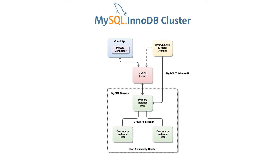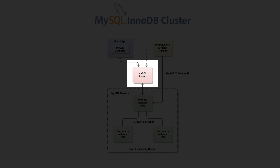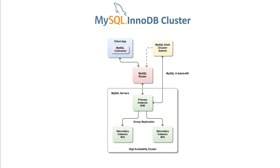And finally, to hide the multiple instances of a cluster behind a TCP port for writes and another one for reads, and to handle connections to the servers in a completely transparent fashion, we have MySQL Router. The router provides transparent routing between your clients and their InnoDB Cluster server instances.